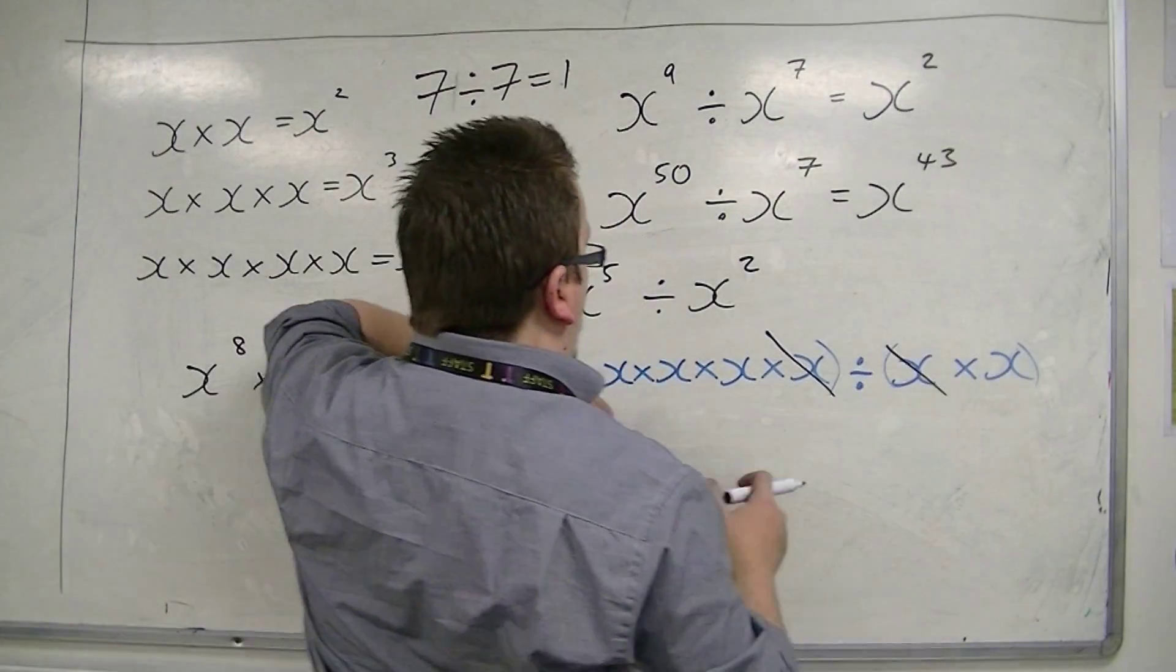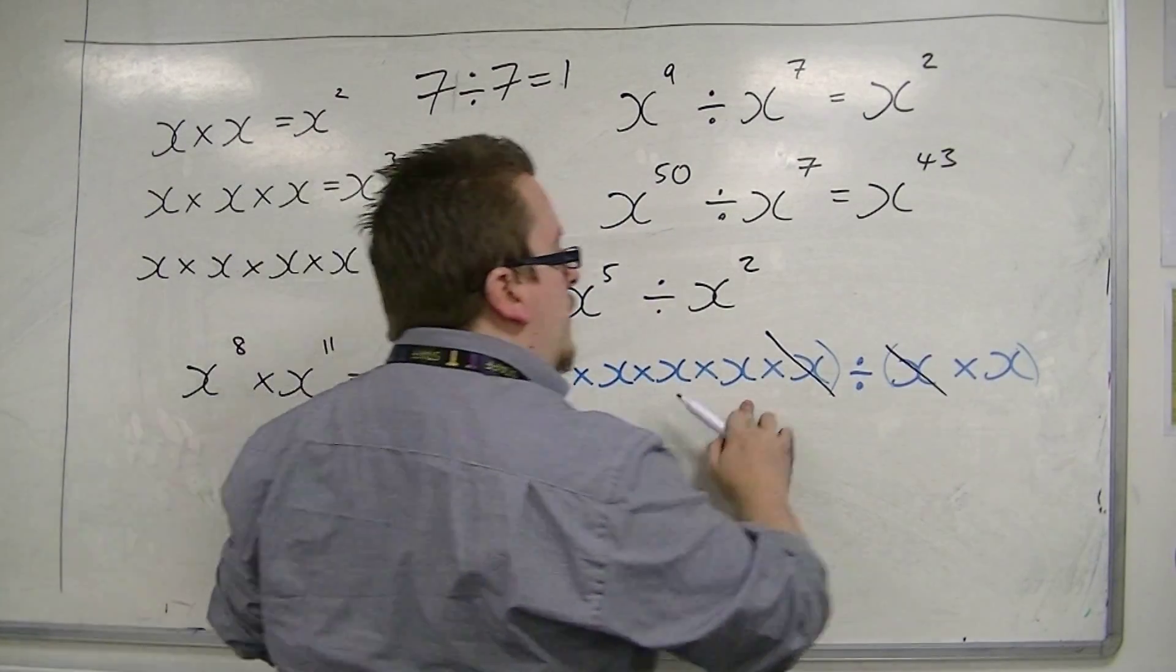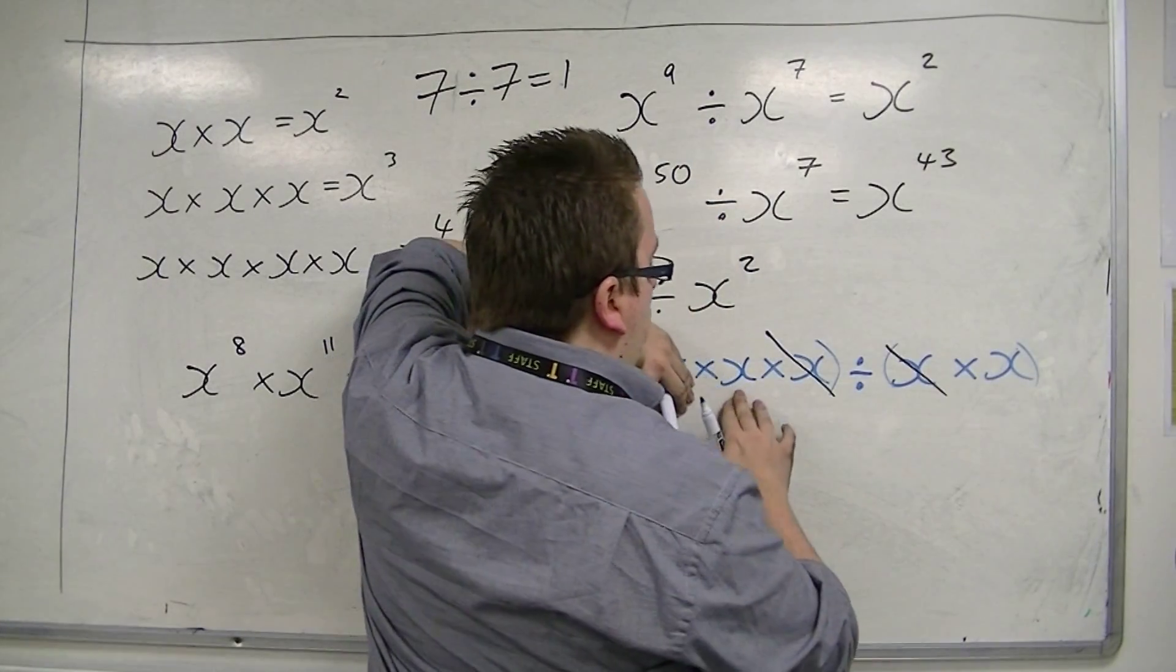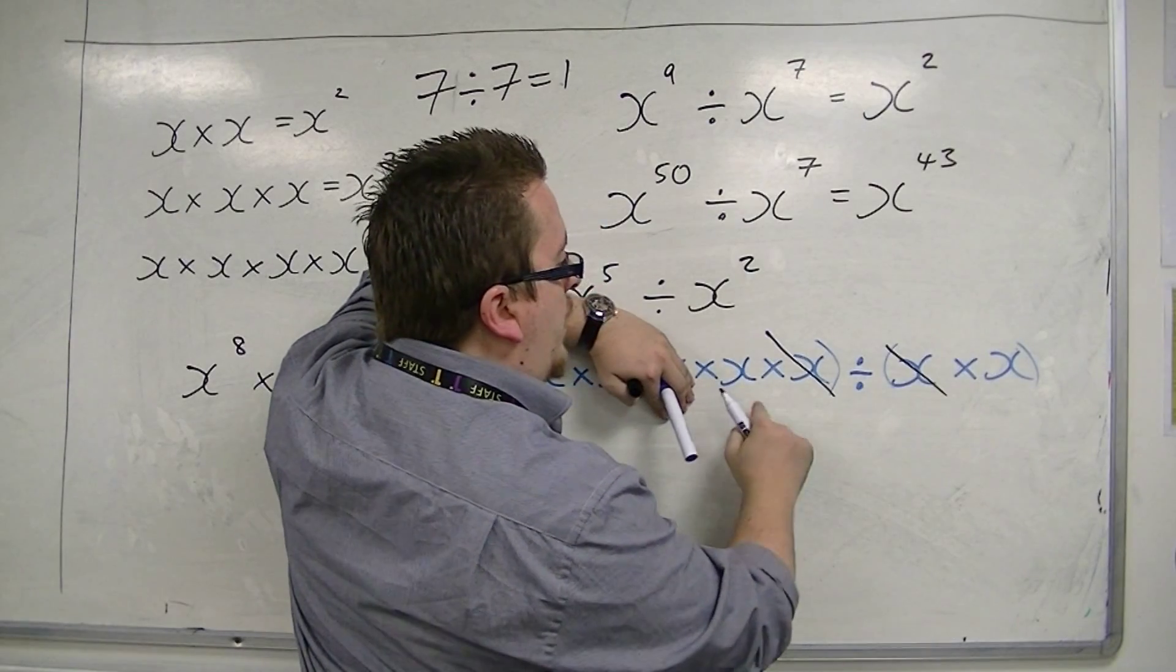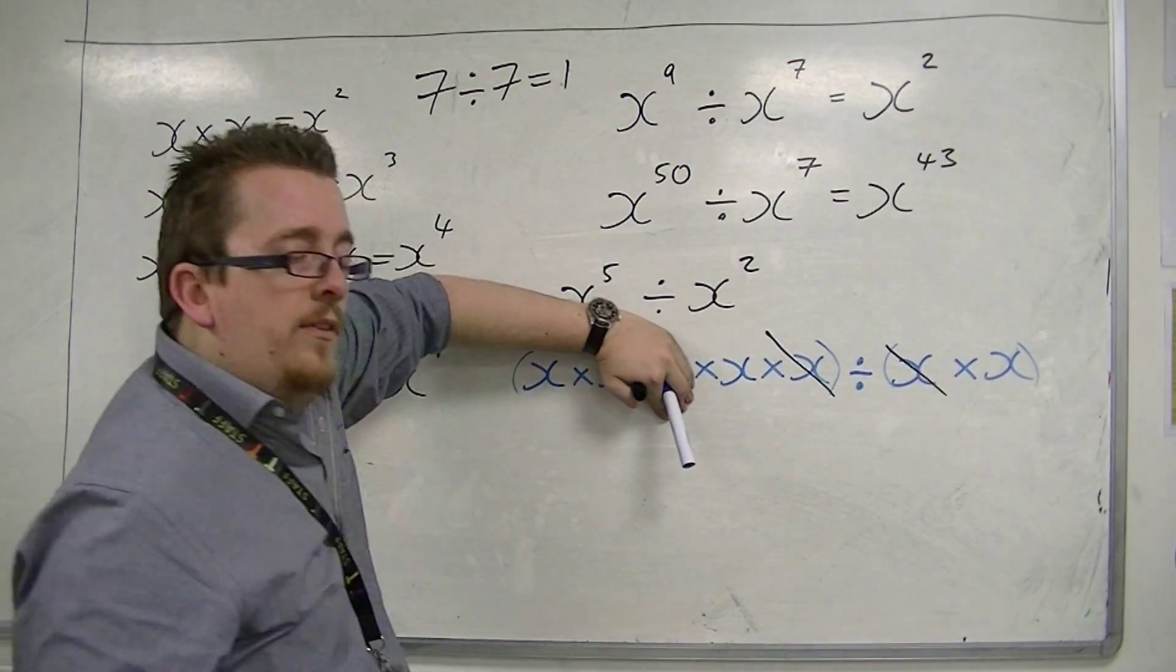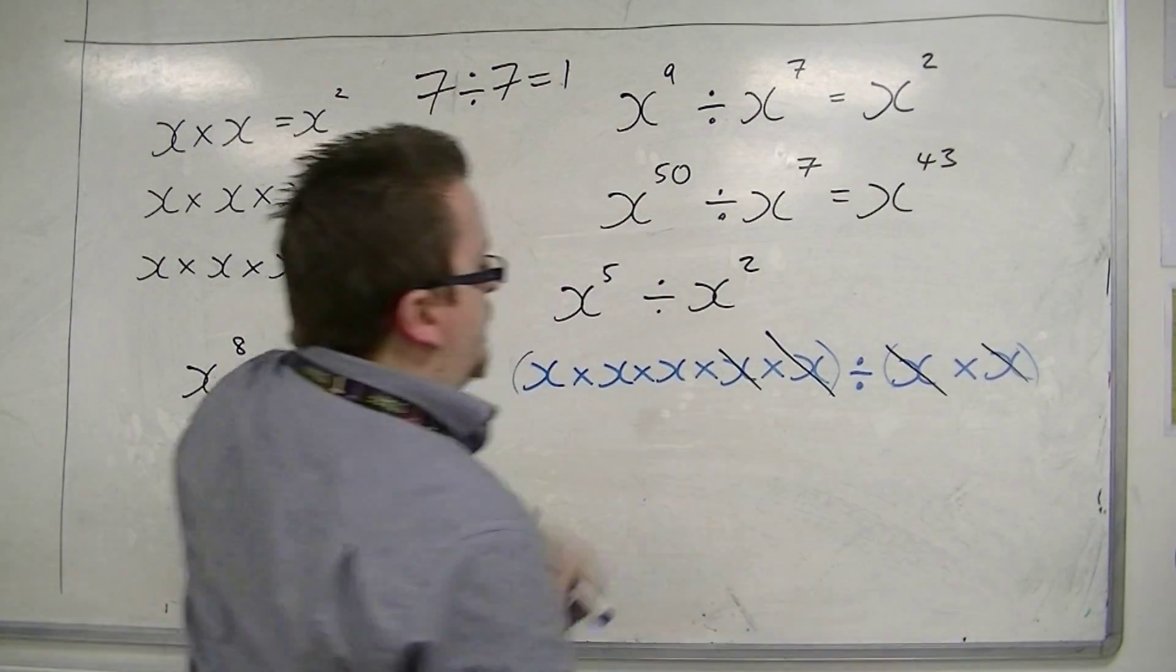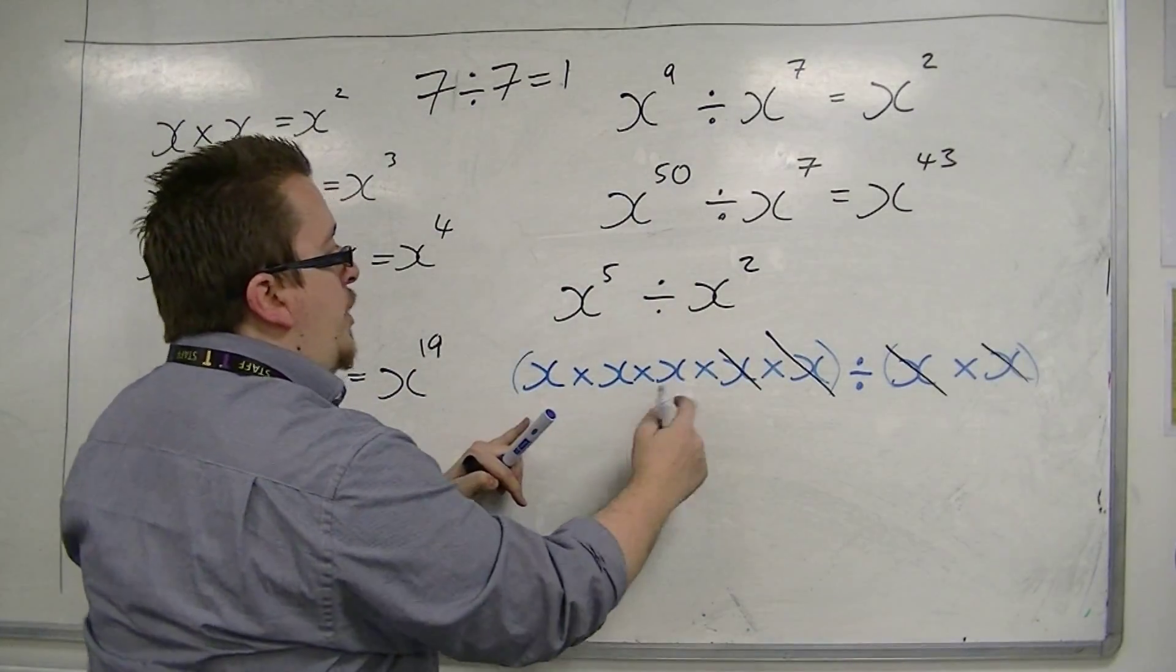And now, I have these 4 x's divided by x. But then I've got, if I blank out all the other x's, I've got x divided by x. But I know that that would just be 1 as well. So they cancel each other out. And you're just left with x cubed.